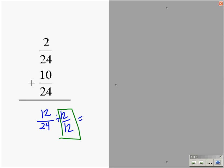So what we're going to do is divide by 12/12. 12 divided by 12 is 1, and 24 divided by 12 is 2. So the answer to 2/24 and 10/24 is 1/2.